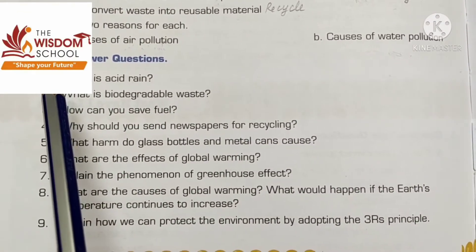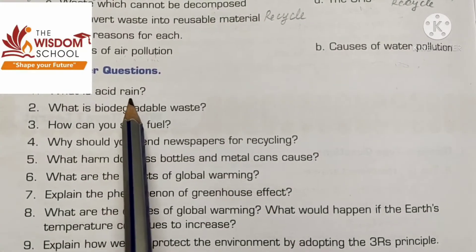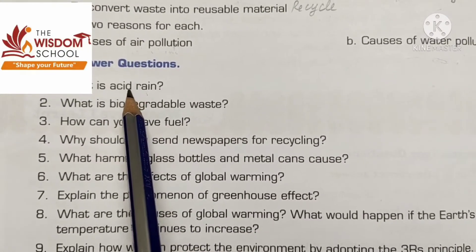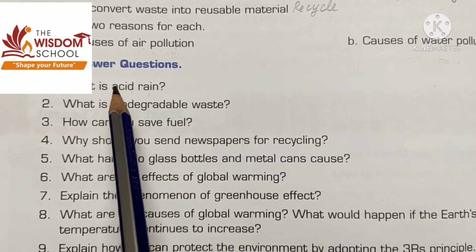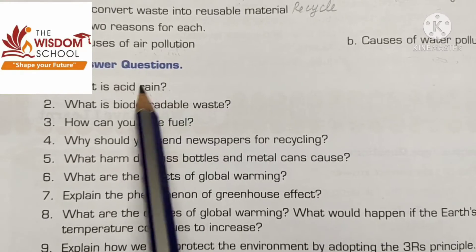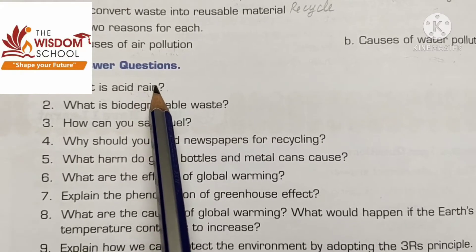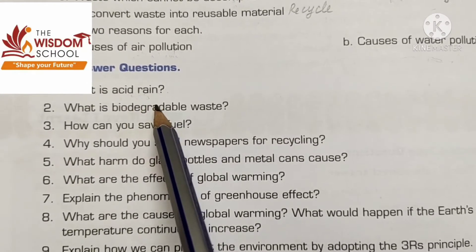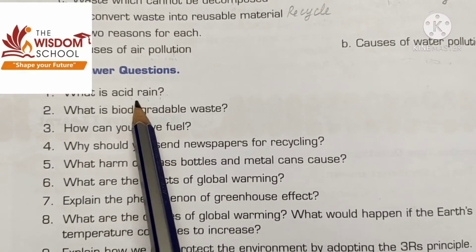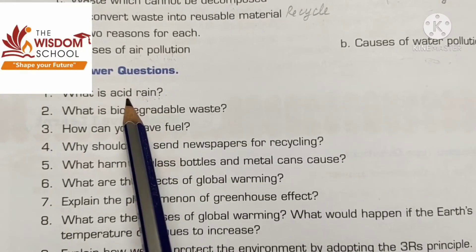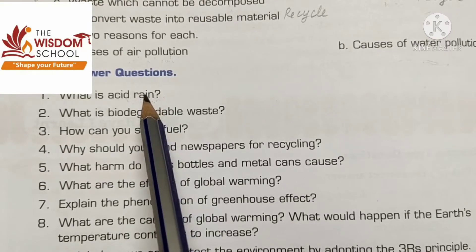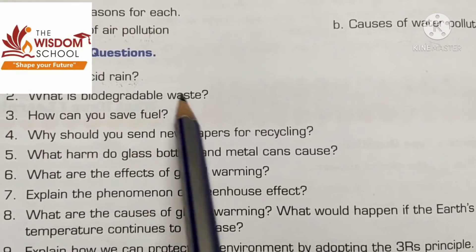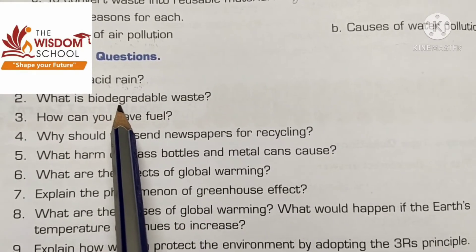Long answer questions: what is acid rain? Harmful gases mix with water vapor in the air and form acids. When it rains, these acids combine with raindrops and fall on the earth. This kind of rain is known as acid rain.